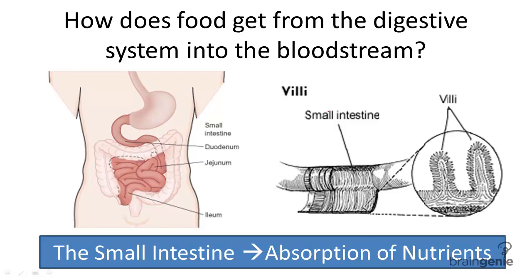What is the absorption of nutrients, and how does it work in the body? A key part of the digestive system is to absorb nutrients, such as carbohydrates, proteins, and fats, from the digestive tract into the bloodstream.